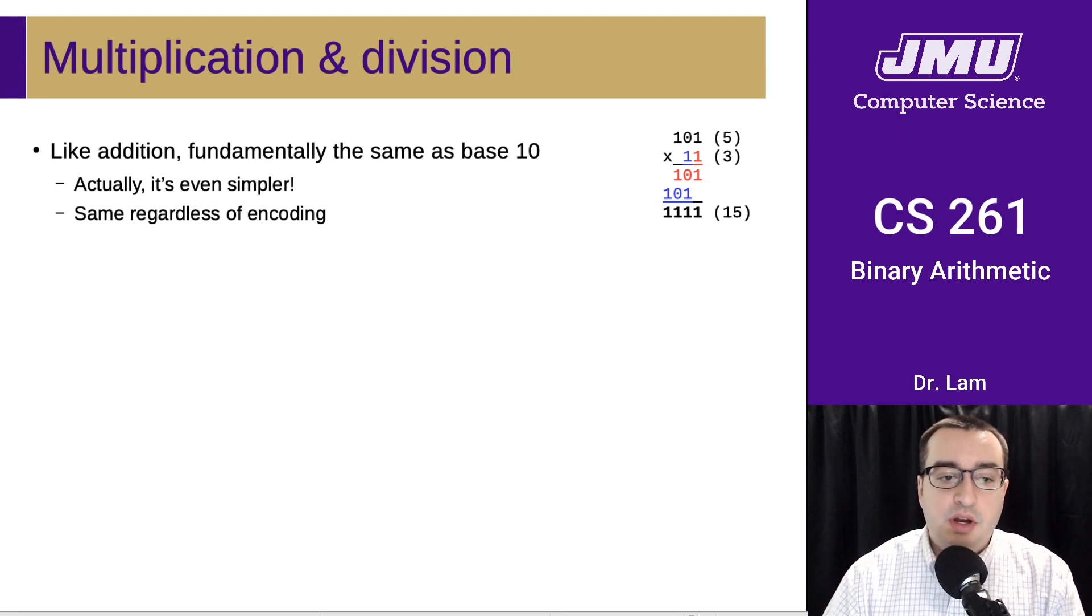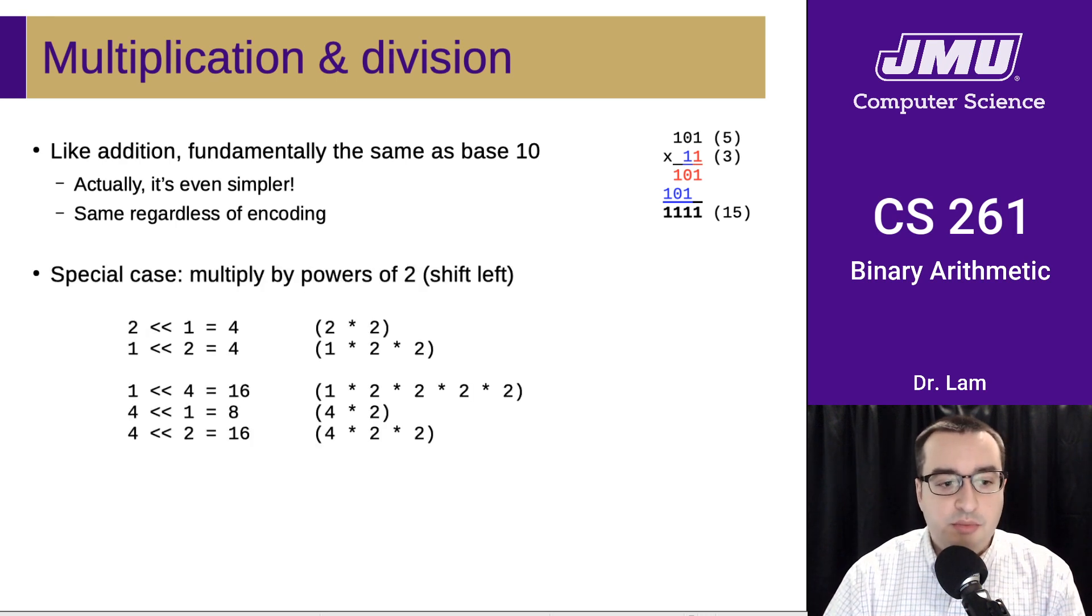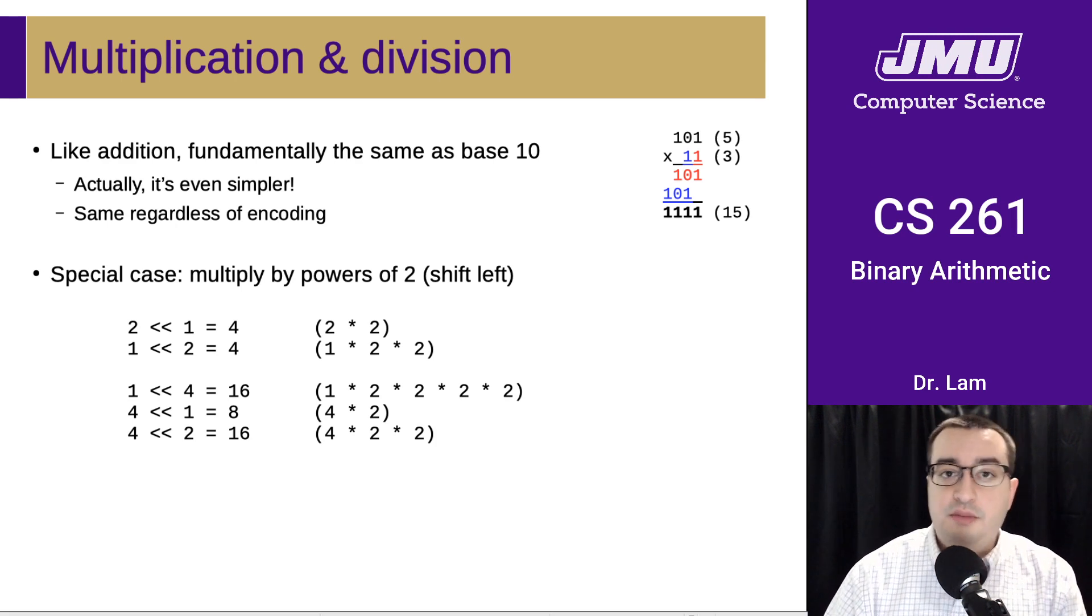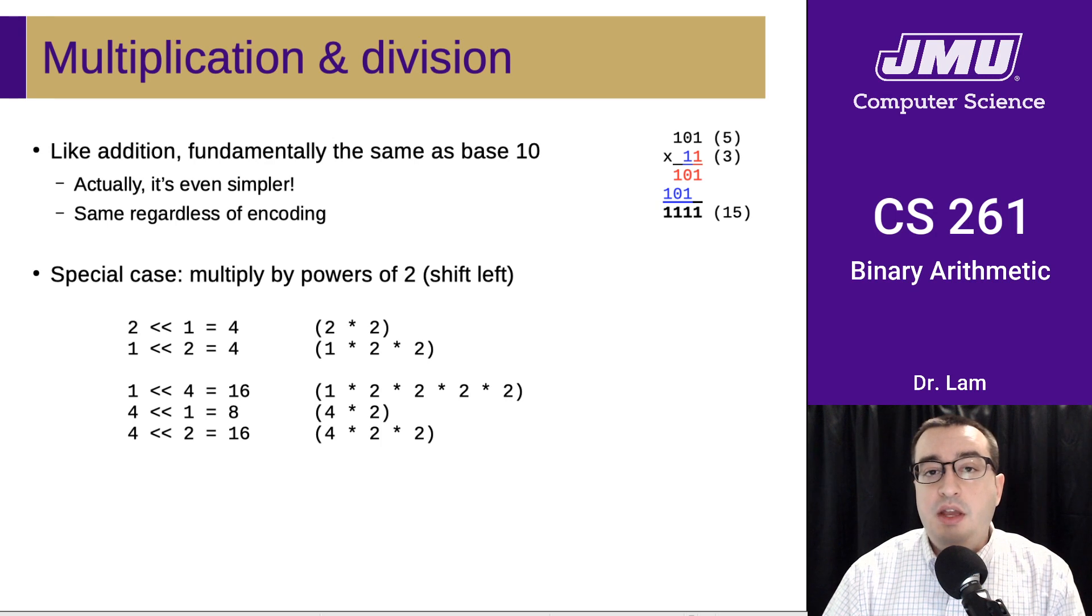That's not particularly difficult to implement. There's a special case worth mentioning: if you're multiplying by a power of two, you don't actually have to do the full multiplication operation. You can just do a shift. In binary, moving everything to the left is equivalent to multiplying by two.